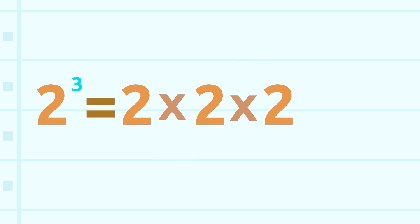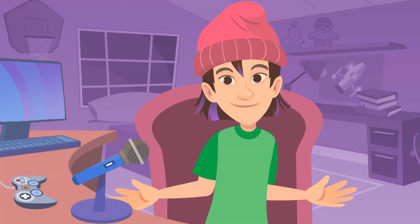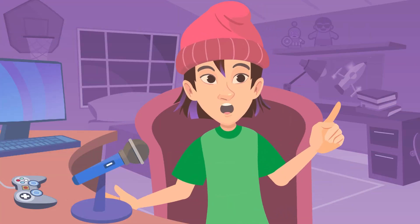So two to the power of three is two times two times two, which equals eight. Meaning that two to the power of three is eight. The result of this multiplication is called power.